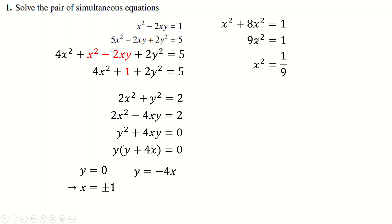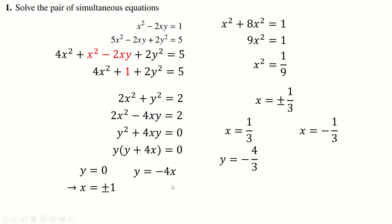Putting those terms together, dividing by 9, and taking a square root with plus or minus — if x is plus a third, you put that in and get y equals minus 4 thirds. Or if x is minus a third, you get y equals positive 4 thirds. Those would be your four pairs of solutions.